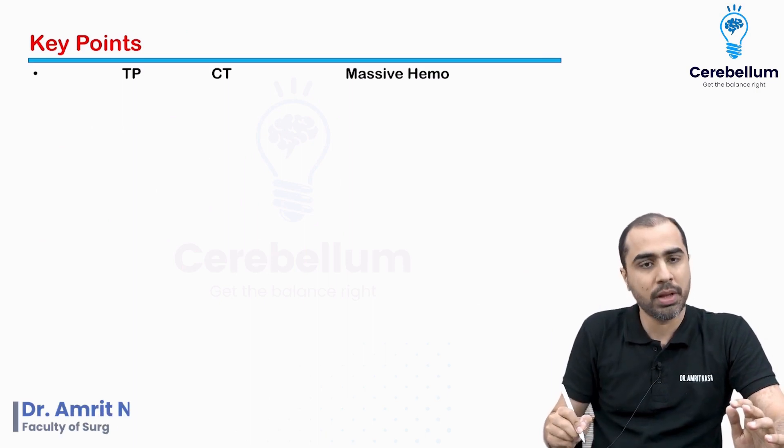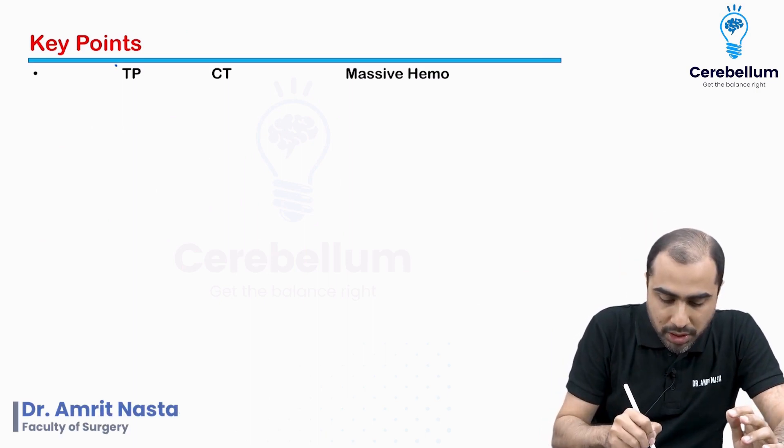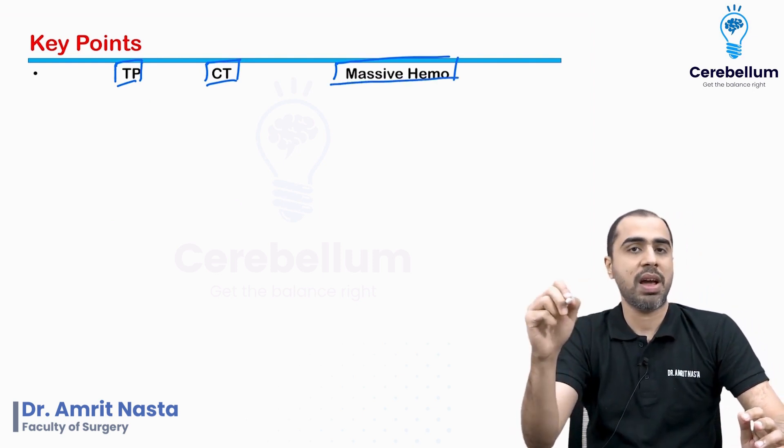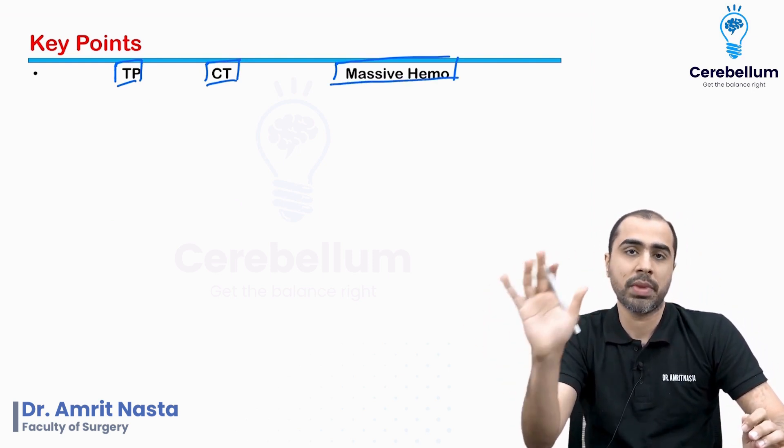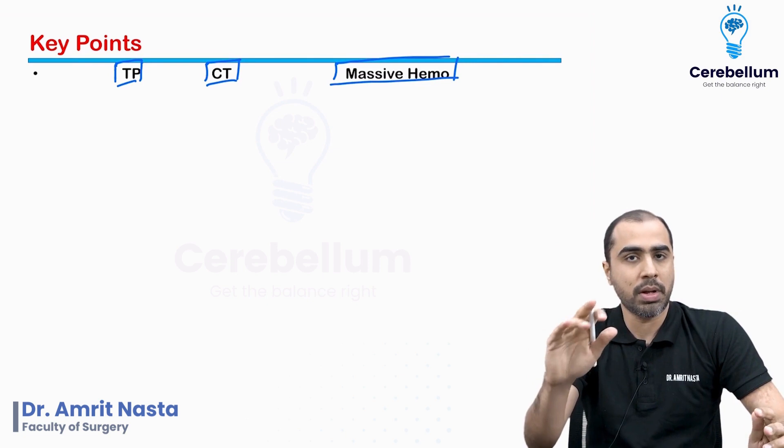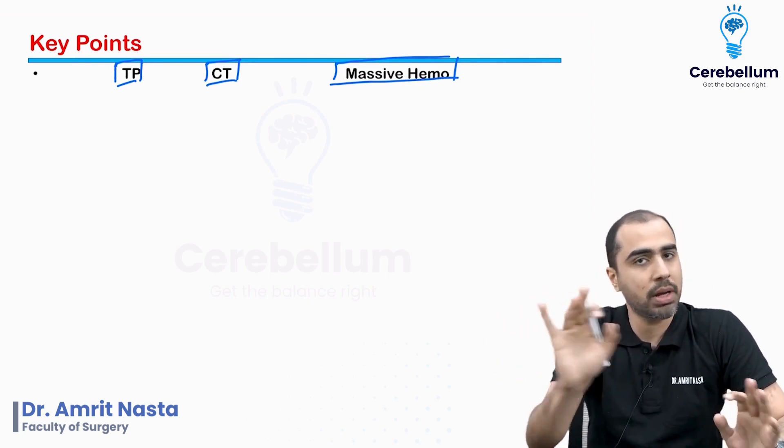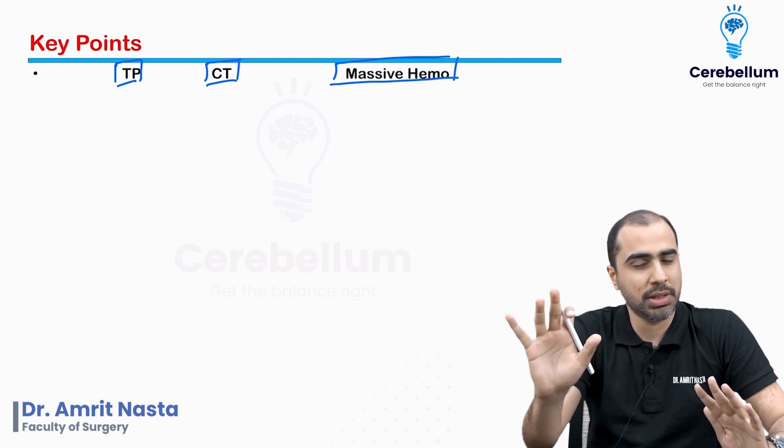Just to make your life simple, the three commonly confused scenarios: tension pneumothorax, tamponade, and massive hemothorax. They will all have the same history. In the MCQ, patient presented with chest trauma, now he is having tachypnea. Chest trauma with tachypnea, that's going to be their typical presentation.